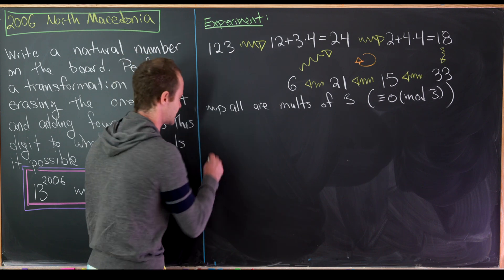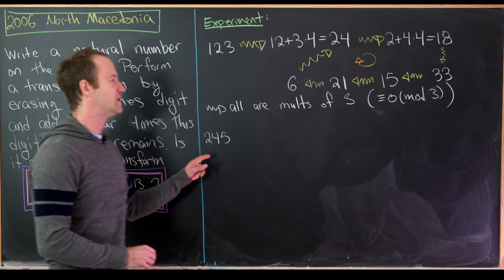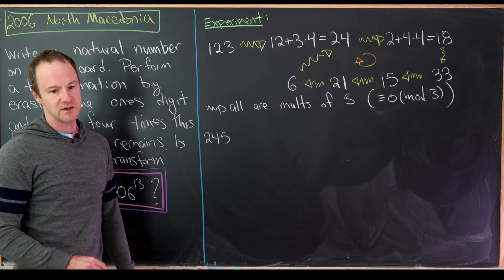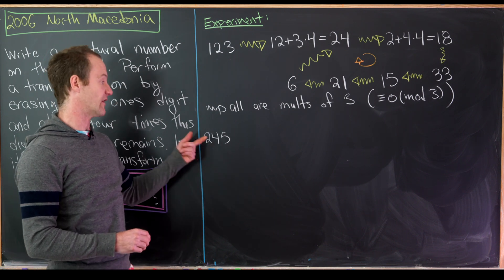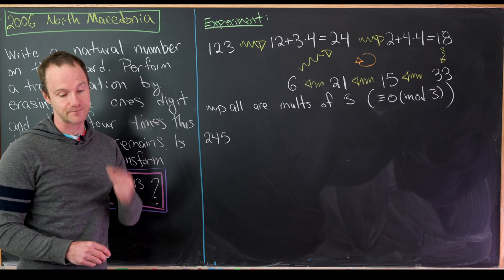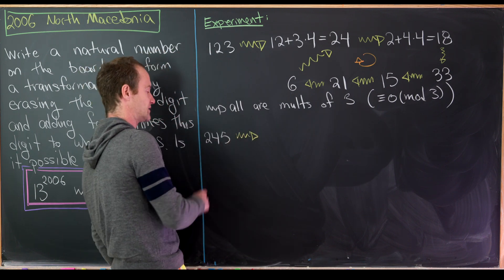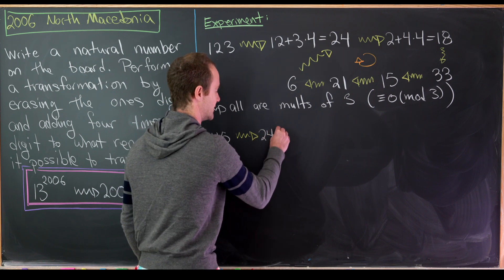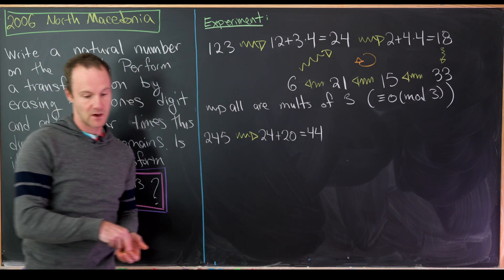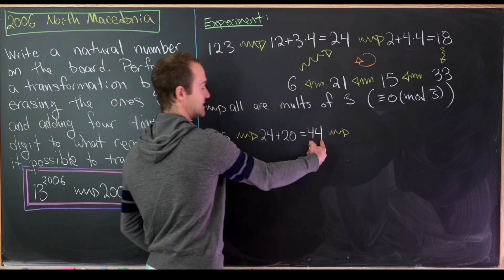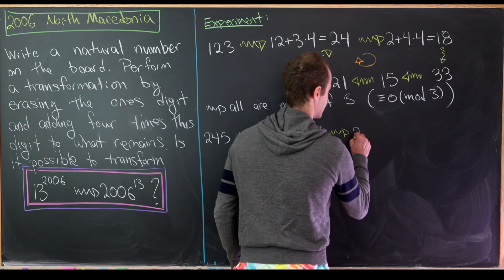Let's do another example. Let's start with 245, and I'm thinking 245 because it's not a multiple of 3. So we can perhaps get some idea if there is some invariant under things that are not multiples of 3. The first step we'll erase the number 5, multiply it by 4 and add it to 24. So that'll be 24 plus 20. That gives us 44. And then the next step we'll erase the 4, multiply it by 4 which is 16, add it to the 4 so that'll give us 20.